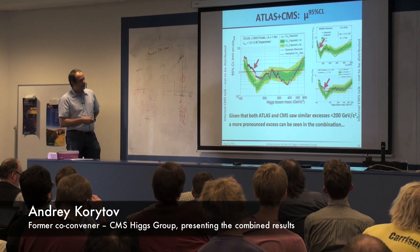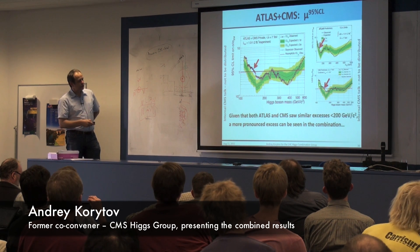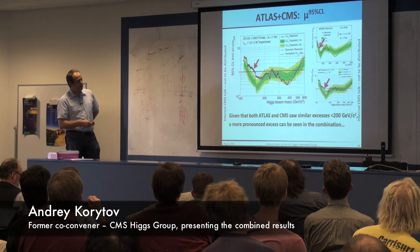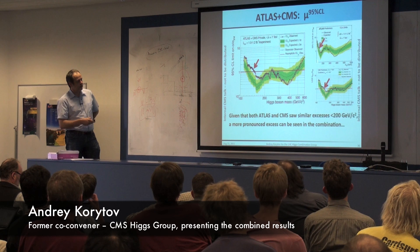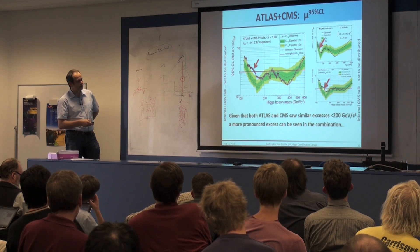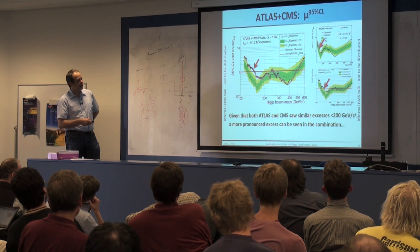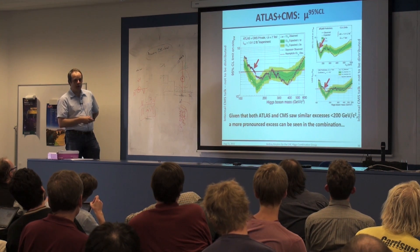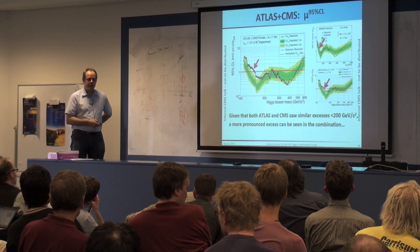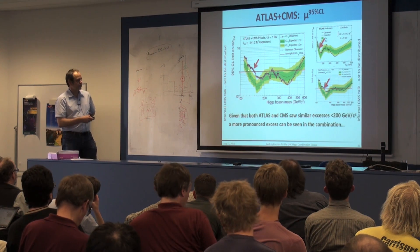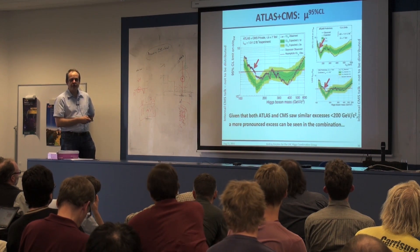Now we saw the success here. You already saw this in a combination from ATLAS and CMS — a little bit of excess, a 2-sigma excess. And of course, when we combine, since it's self-consistent, we have 2-sigma in ATLAS and 2-sigma in CMS. Since it's self-consistent, when we combine, we'll get a boost to the excess.